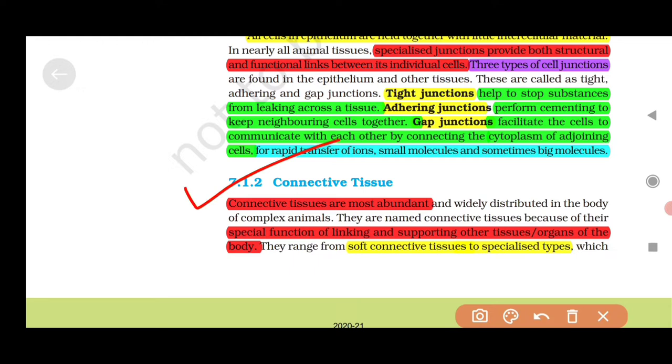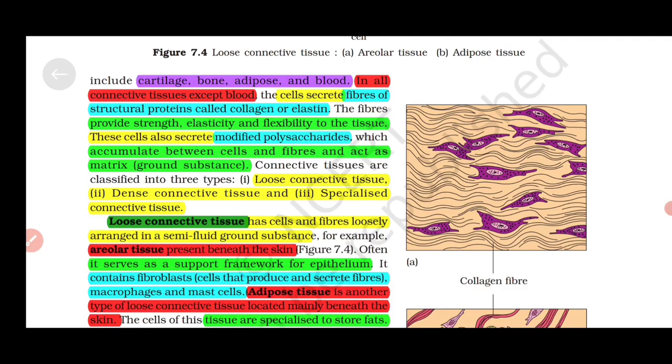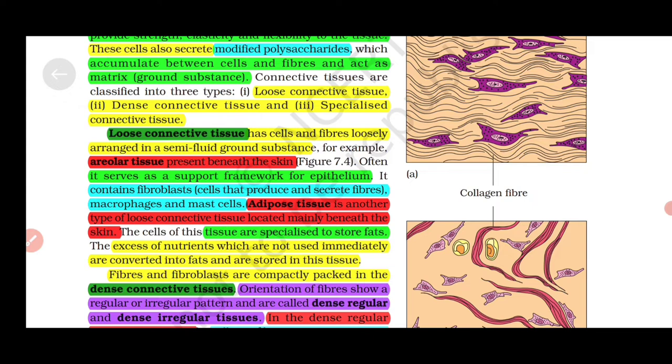7.1.2 Connective Tissue: Connective tissues are most abundant with special functions of linking and supporting other tissues or organs of the body. Types include soft connective tissues and two specialized types: cartilage, bone, adipose, and blood. In all connective tissues except blood, cells secrete fibers of structural proteins called collagen or elastin, providing strength, elasticity, and flexibility. These cells also secrete modified polysaccharides that accumulate between cells and fibers and act as matrix or ground substance. Connective tissues are classified into three types: loose, dense, and specialized connective tissue.